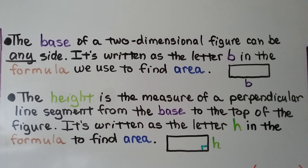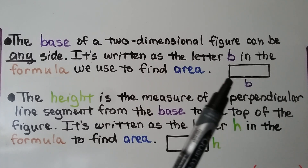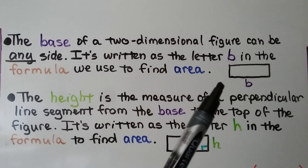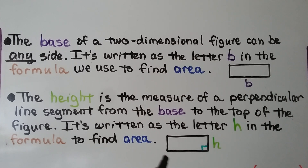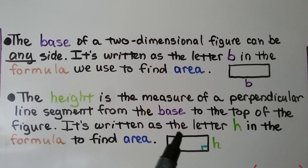The base of a two-dimensional figure can be any side. It's written as the letter B in the formula we use to find area. We can use any side as the base. The height is the measure of a perpendicular line segment from the base — written as the letter H in the formula. Perpendicular lines form right angles.